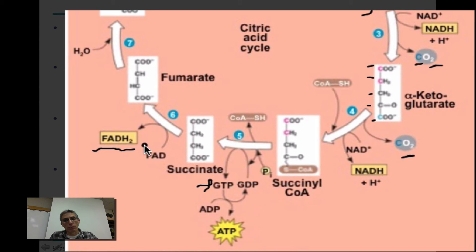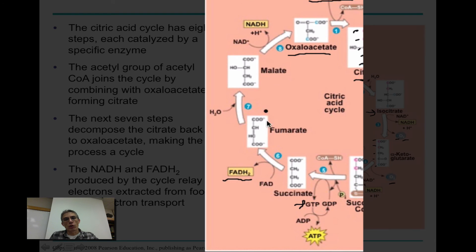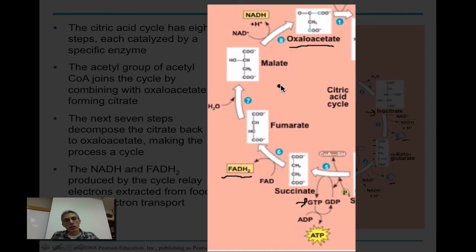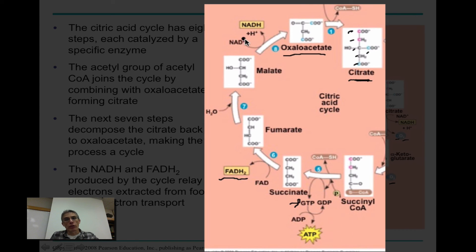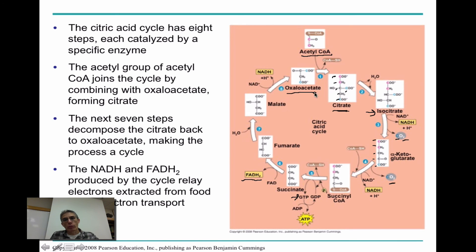As we transition from fumarate to malate, we have the addition of water, which adds two hydrogens. Looking at malate, we have four hydrogens — all accounted for. There's been no change in the number of carbons; we still have four, since nothing requiring carbon has been produced. Then transitioning from malate to oxaloacetate, we have one final electron carrier produced: NAD+ is reduced to NADH. And then we're back to where we started.